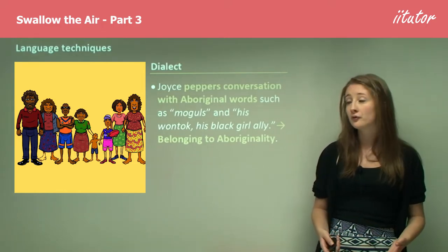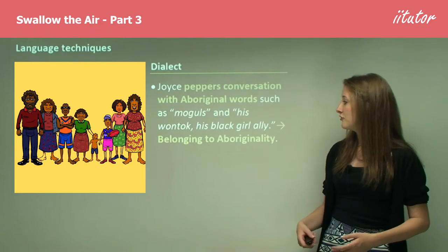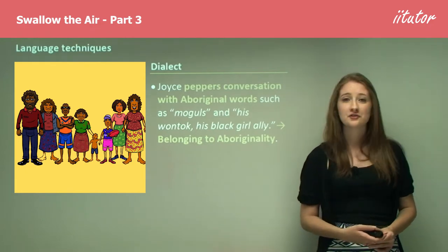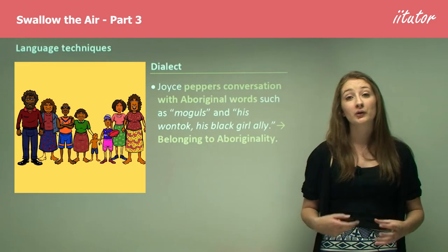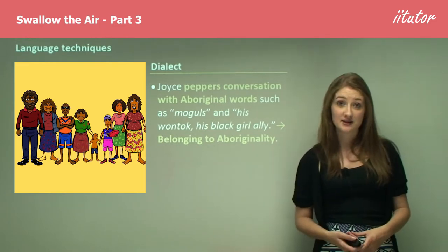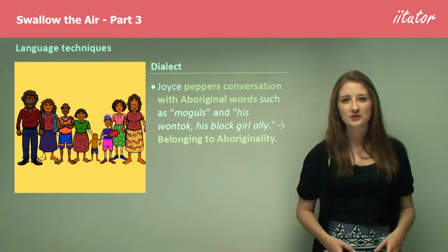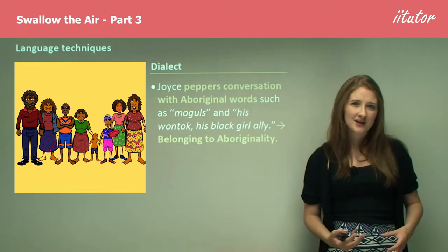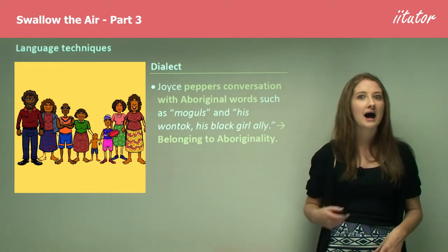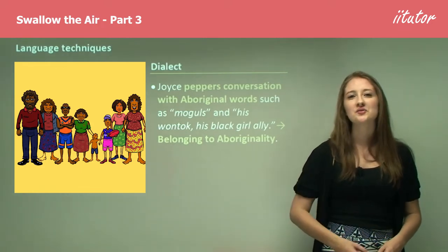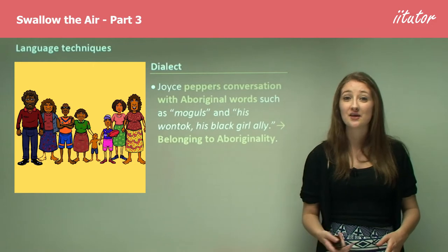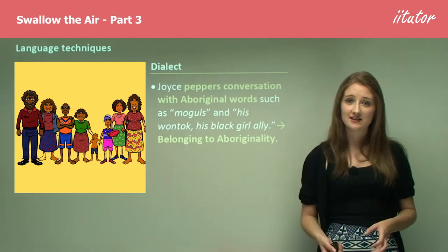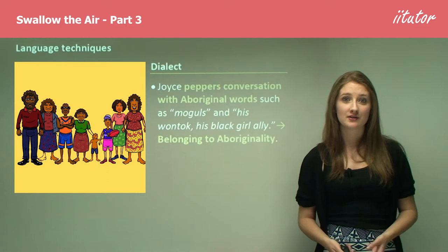For example: 'moguls and his one talk, his black girl, Ali.' This is definitely a representation of belonging to Aboriginality. The language Joyce uses is expressive of the fact that she is Aboriginal and she doesn't want to hide that through her language. She wants to accentuate it by using words which people recognise as very distinctive to Aboriginal culture.